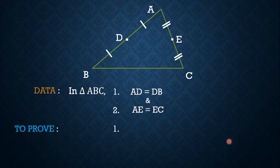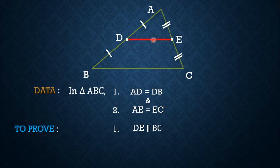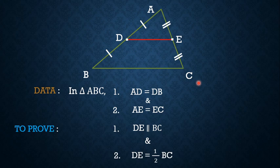Given this, we have to prove two things. Number 1: the line segment DE — joining the midpoints of the two sides AB and AC — is parallel to the third side BC. Number 2: DE is equal to half of BC.